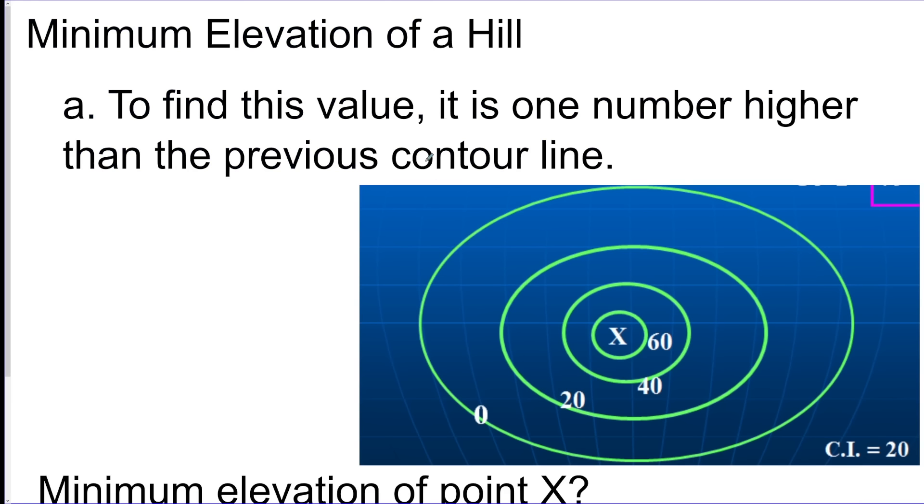Minimum elevation is just one number higher than the previous contour line. So if you want the minimum elevation for x, it goes 0, 20, 40, 60. One higher than that, it would be 61.